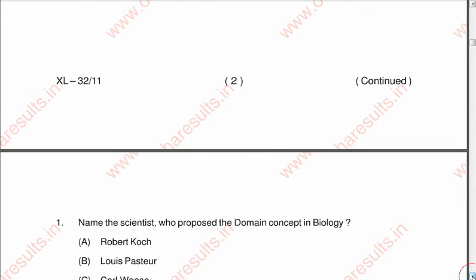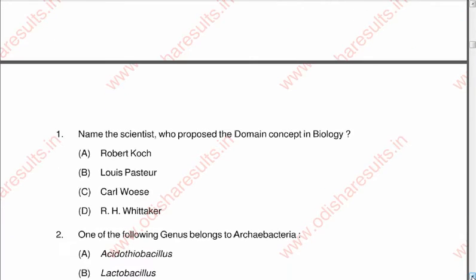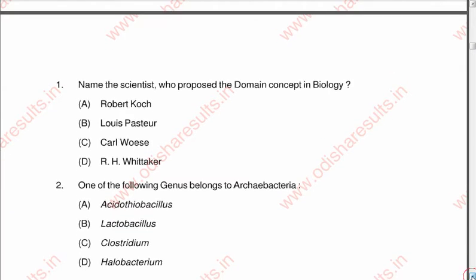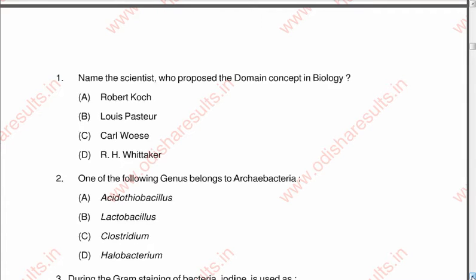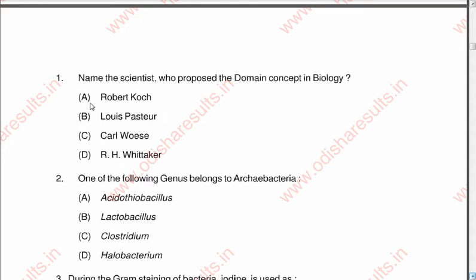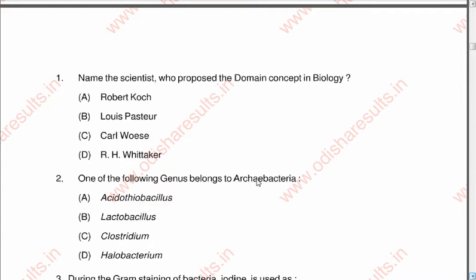Question number one: Name the scientist who proposed the domain concept in biology. Option A: Robert Koch, Option B: Louis Pasteur, Option C: Carl Woese, Option D: RH Whittaker. The correct answer is RH Whittaker. Question two: One of the following genus belongs to Archaebacteria. Options: A: Acidothiobacillus, B: Lactobacillus, C: Clostridium, D: Halobacteria.